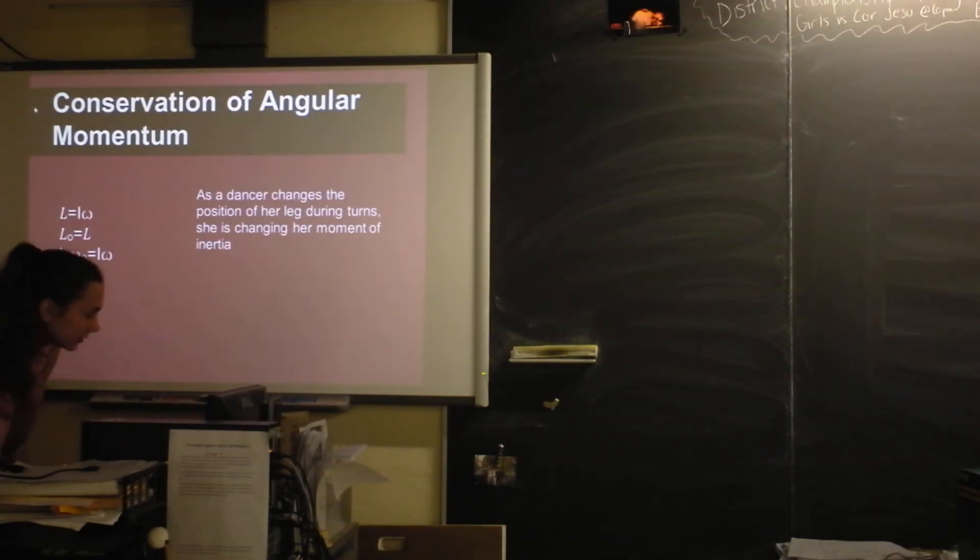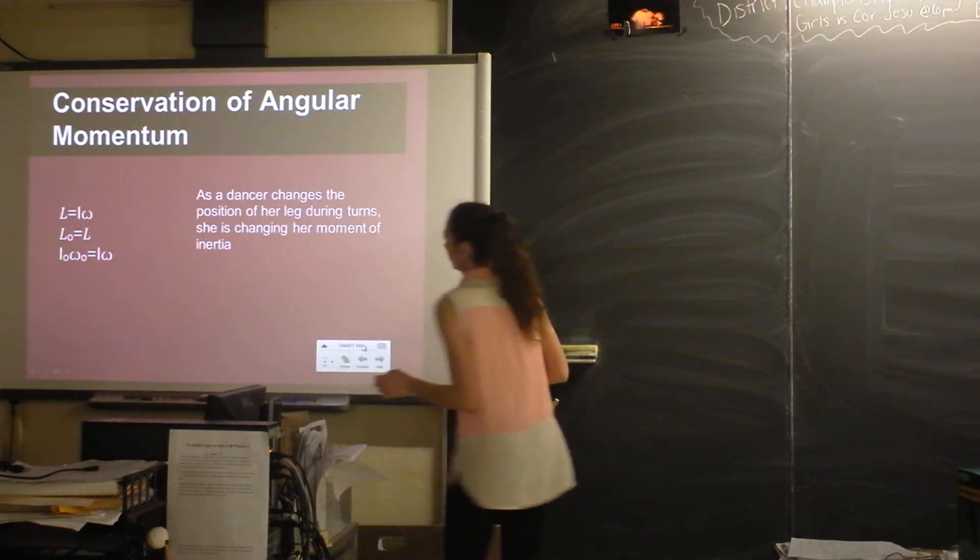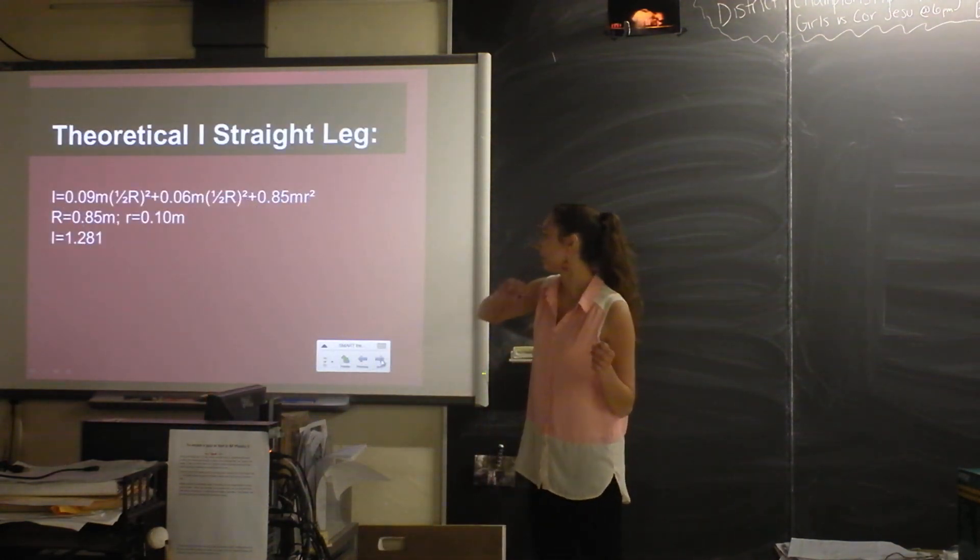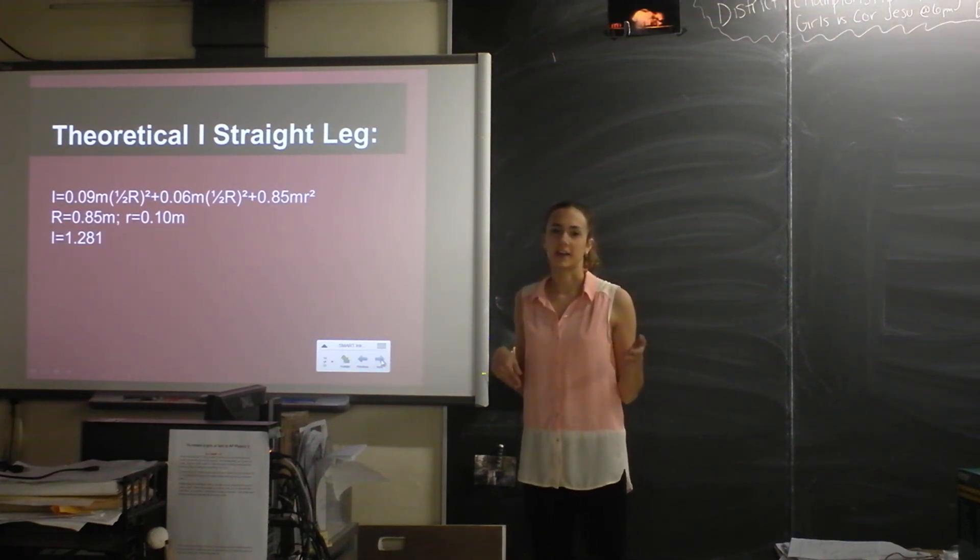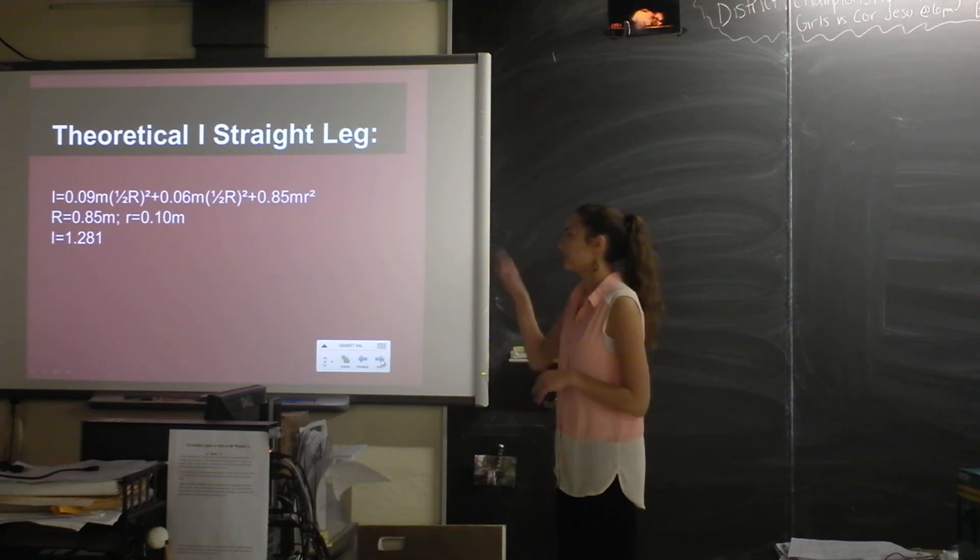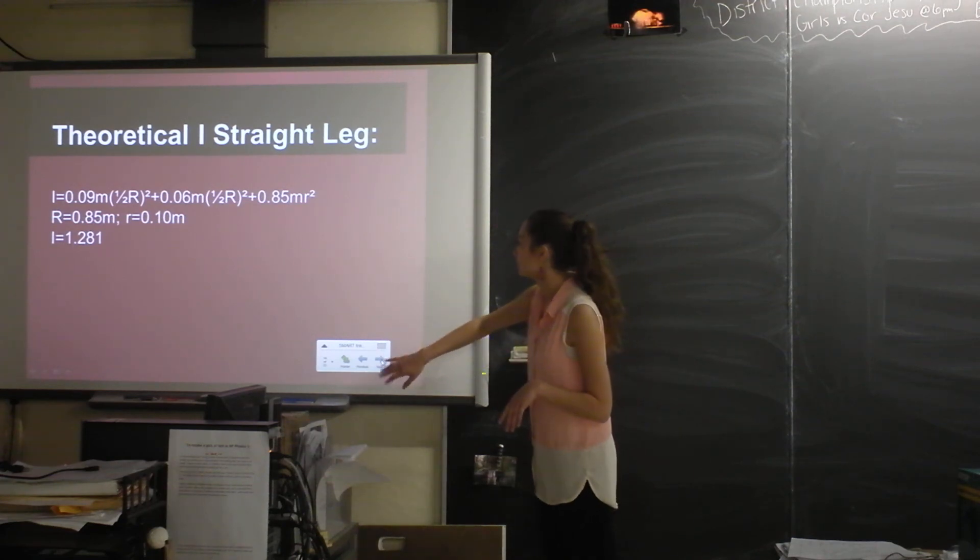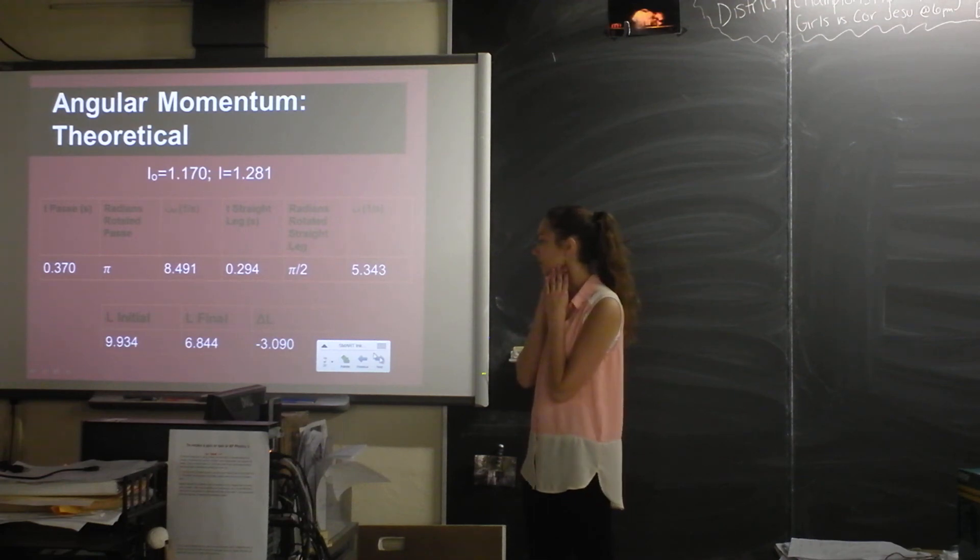So I did the same process as before where I plotted the position of her leg over time. I just used theoretical moments of inertia for this since I didn't have an experimental value for when she had a straight leg. But I did the same process with body mass distribution. And then I used the same process to find the angular speed. I just took small intervals of rotation.